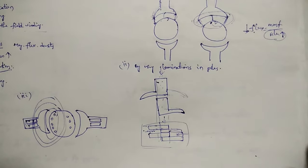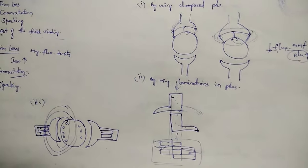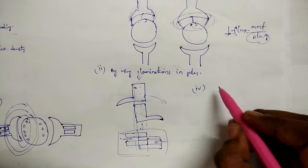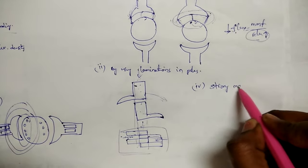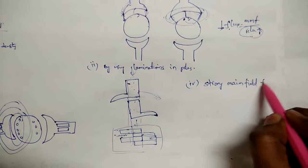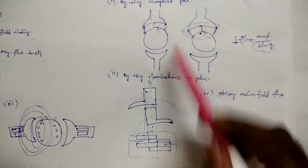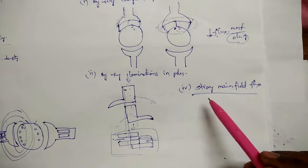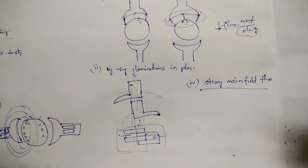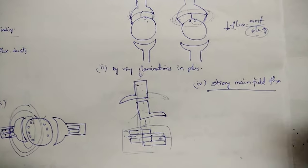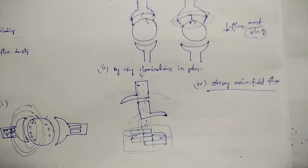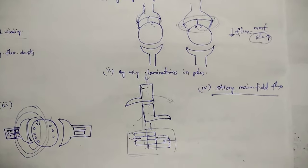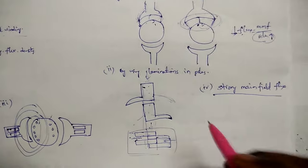The fourth method is by making the main field flux strong. While the first three methods reduce the armature flux, this method increases the main field flux during the manufacturing process by winding more number of turns in the main field winding. With a stronger main field flux, the armature flux cannot influence it as much, even under heavy loads.